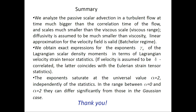In summary, we analyze passive scalar advection in a turbulent flow at times much bigger than the correlation time of the flow and at scales much smaller than the viscous scale. We obtain exact expressions for the exponents of the Lagrangian scalar density moments in terms of Lagrangian velocity strain tensor statistics. If velocity is assumed to be delta-correlated, this coincides with the Eulerian strain tensor statistics. The exponents saturate at the universal value alpha equal to 2, independently of the statistics, and in the range between alpha 0 and alpha 2 they can differ significantly from those in the Gaussian case.